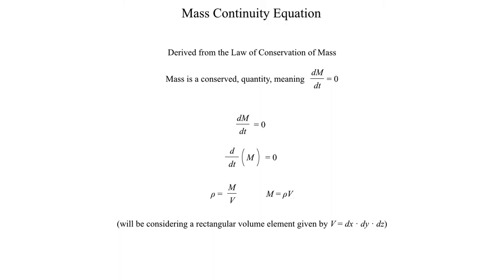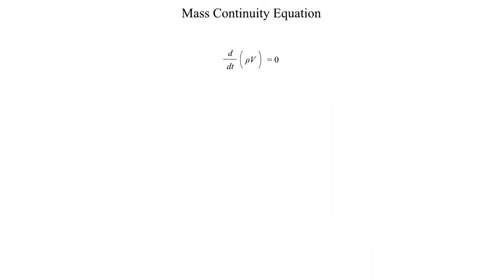In this case, we're going to be considering an infinitesimally small volume element. So that means volume is equal to some infinitesimal difference in the x direction times some infinitesimal difference in the y direction times some infinitesimal distance in the z direction — you can think of this as a really, really tiny cube in some portion of the atmosphere. Making that substitution, we get d/dt of ρV equal to zero.